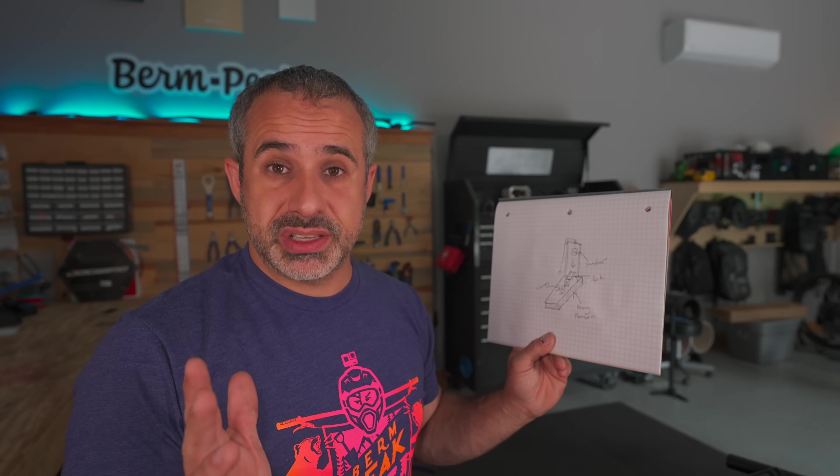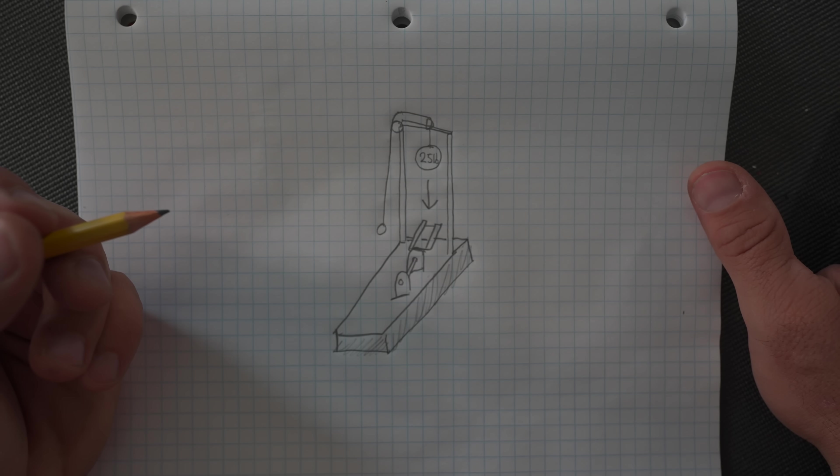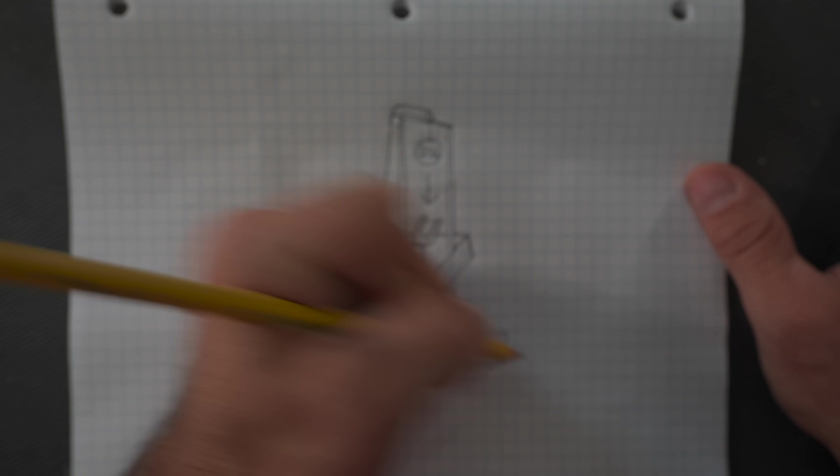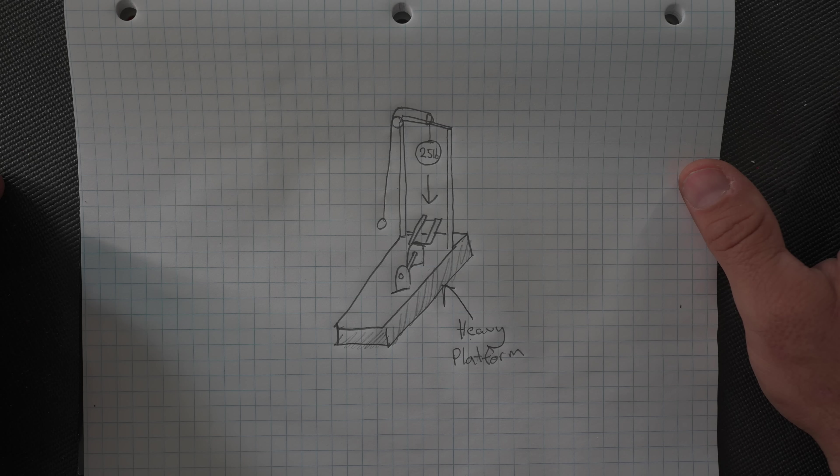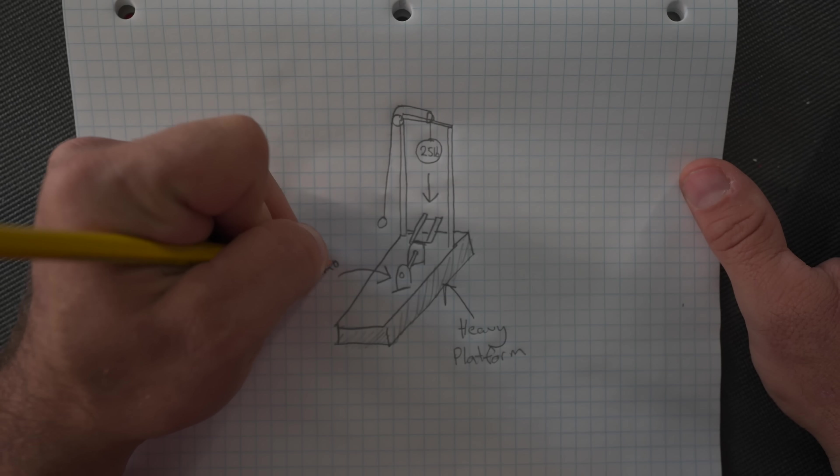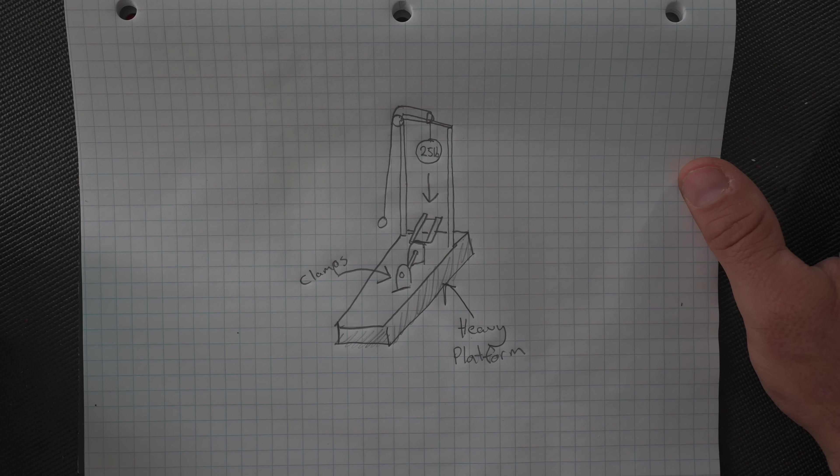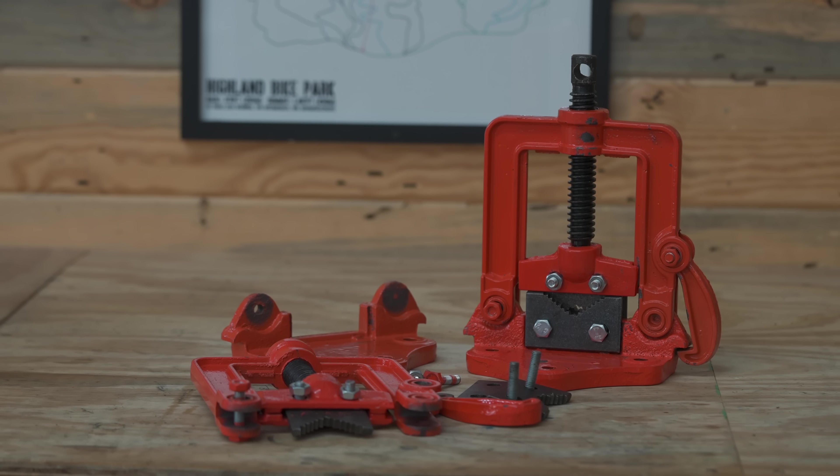Not the most impressive technical drawing, but it gets the point across. So here we have a heavy platform. It has to be heavy for the sake of being heavy because we're going to use it for smashing. Then we have these clamps that we can use to hold a fork or other bike part in place, and so they're going to need to be mounted to the platform.